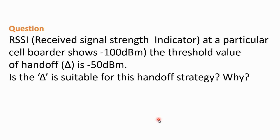I am giving you a question: the received signal strength indicator RSSI at a particular cell border shows minus 100 dBm and the handoff threshold delta is minus 50 dBm. Is this a good strategy in mobile communication — yes or no? Tell me the answer and explain why. If it is yes, explain why; if it is not a good strategy, explain why it is not. Thank you so much, bye bye.